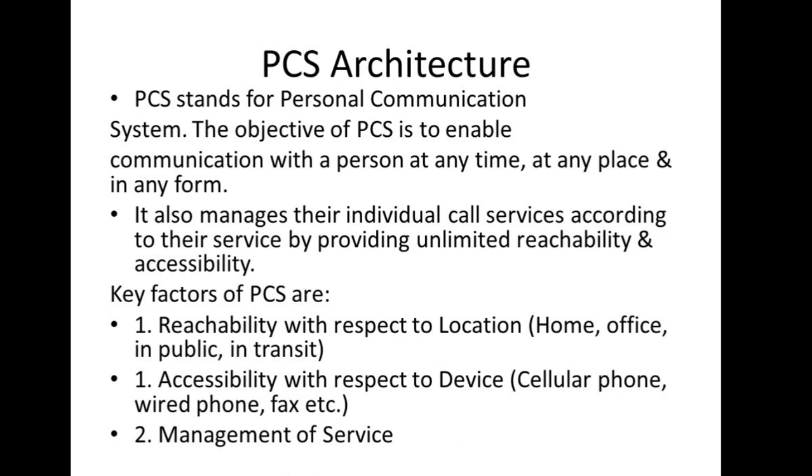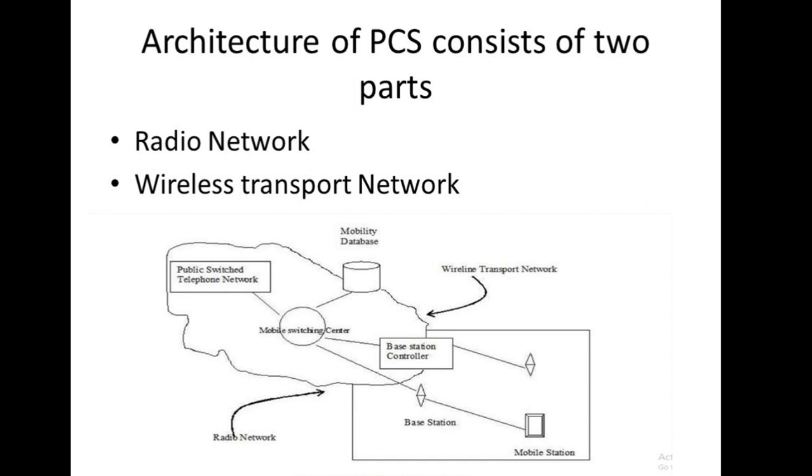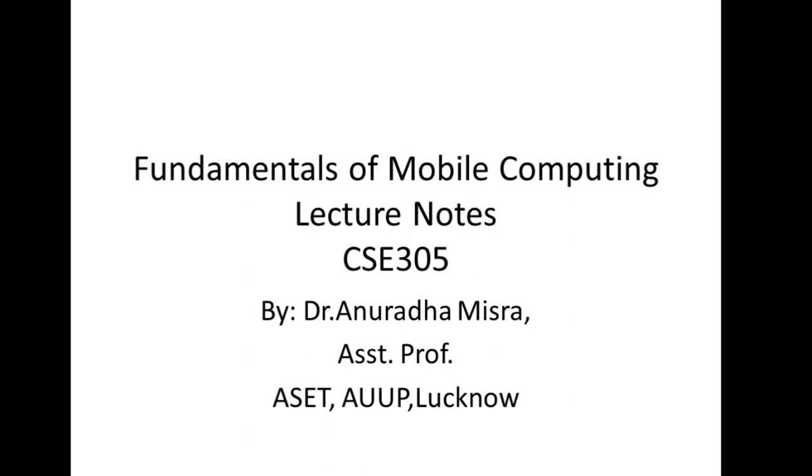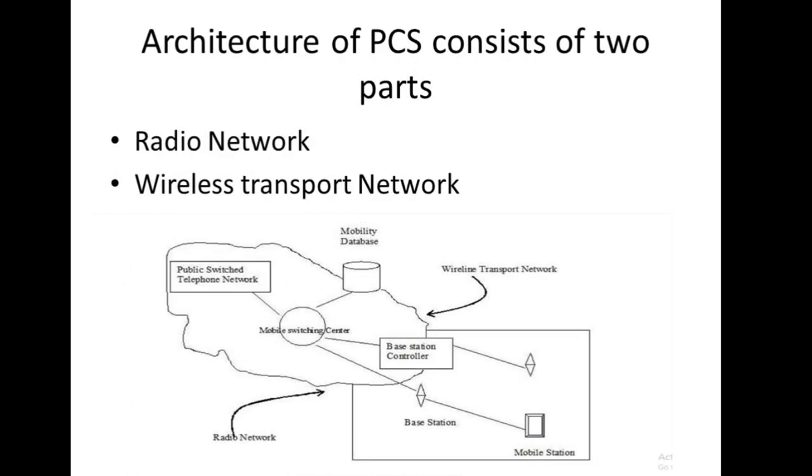Now we come to the architecture of PCS. The architecture of PCS basically consists of two parts: first one is the radio network and the second one is the wireless telephone network. The radio network helps PCS users to carry mobile stations or MS with the base stations, that is BS, using the PCS network. MS is also referred to as headset or mobile phone. The radio coverage of a base station is called a cell in GSM network.